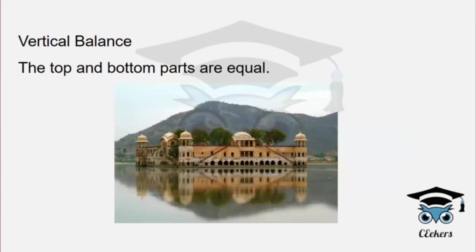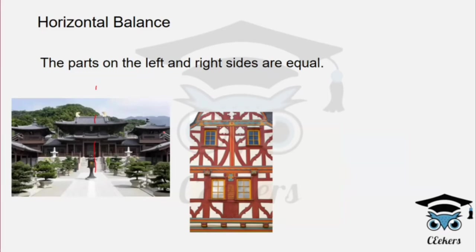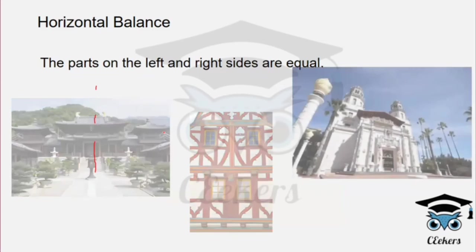Vertical balance means top and bottom balance. Horizontal balance means elements are balanced horizontally — you can radiate a horizontal balance along the horizontal axis.